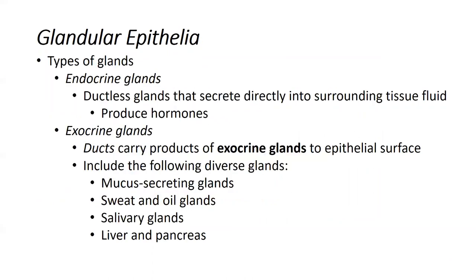Let's pick up our last two objectives on this packet, which were differentiating glands. We're going to talk about the two types of glands and the two mechanisms for glandular secretion. The first one is the endocrine glands, and these are ductless glands that release their secretions into the tissue fluid surrounding that gland.